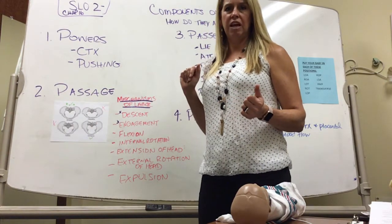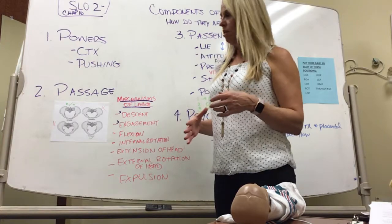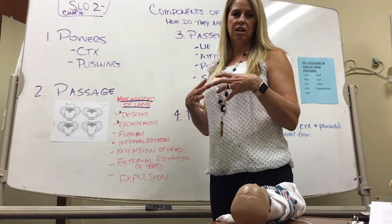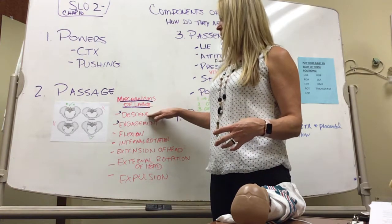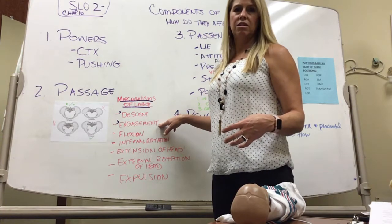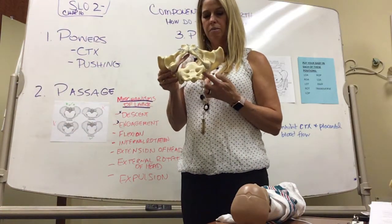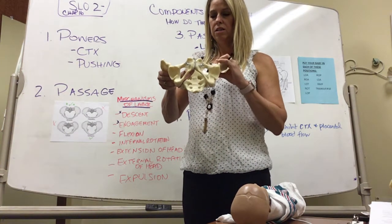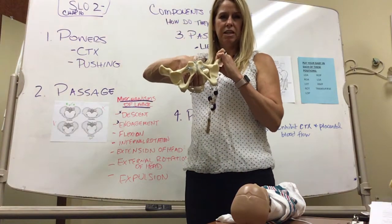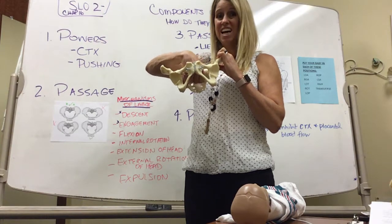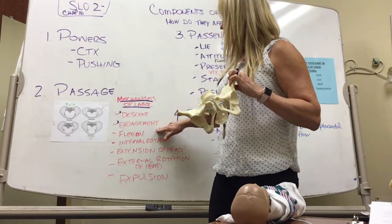If the passage is not adequate, it affects the mechanisms of labor — those cardinal movements the baby has to make to get through the pelvis. Can the baby descend? Is the baby's head too big to go into mom's pelvis? After the baby descends, they engage, meaning the baby is even with mom's ischial spines. The ischial spines are these prominences here — we're looking for whether the baby's head is at the level of those ischial spines. If the pelvis isn't big enough, you would have failure of engagement or failure of descent, which can be a reason for a c-section.